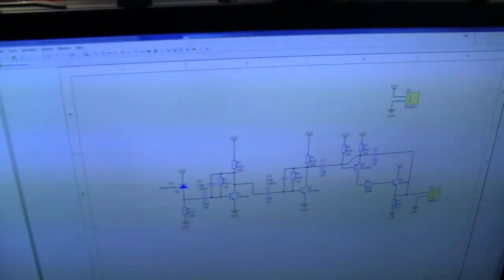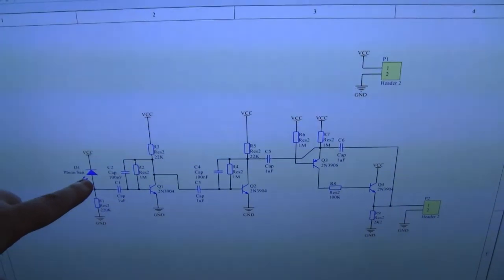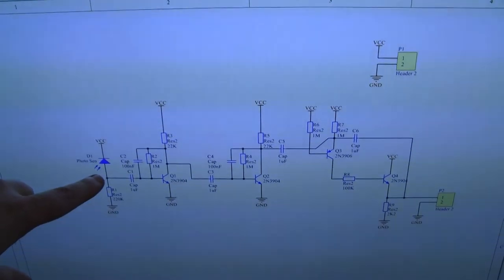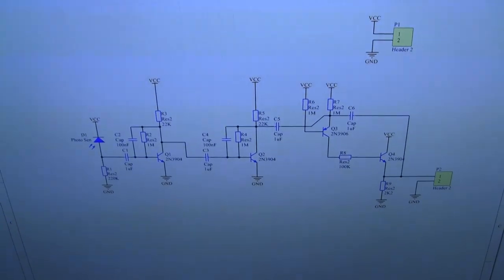Here's the circuit. It's very simple. The thing that I've put here as a photodiode is actually a cadmium sulphide cell. I was just doing this really quickly in this schematic capture program.